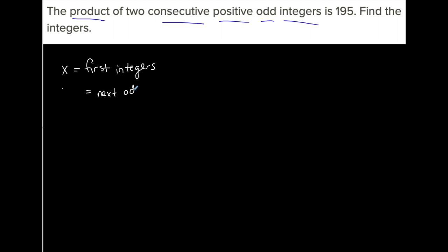Let's find an expression for the next odd integer. When you're dealing with odd integers—three, five, seven, nine—the difference between each one is two. Three to five, five to seven, the difference between every odd integer is two.